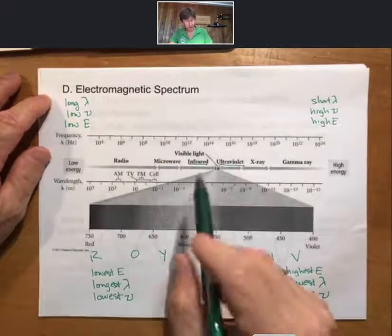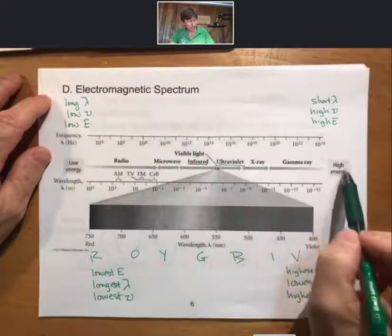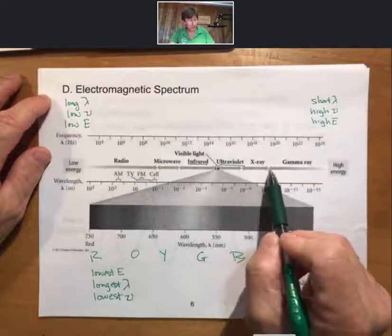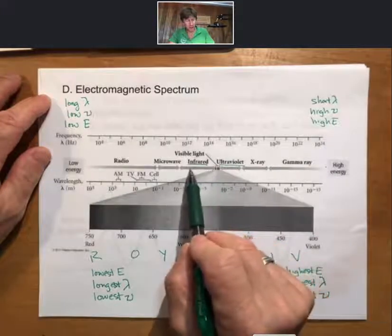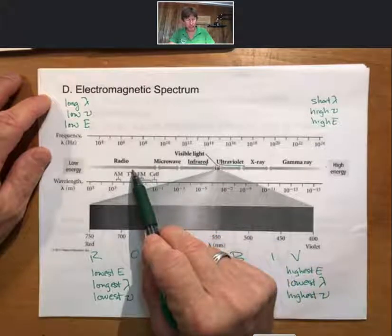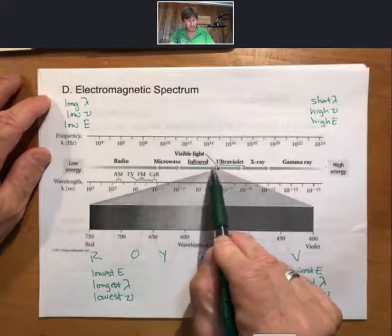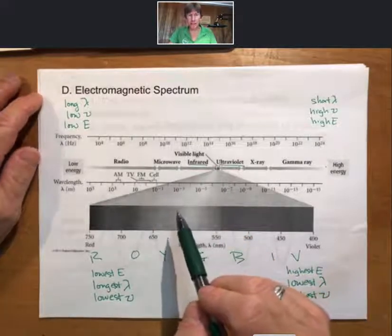As you go to higher and higher frequencies and higher energies, you'll go to ultraviolet, then x-ray, then gamma rays. In the other direction you'll go to infrared, microwave, and radio waves. And here's our cell phone waves out here.